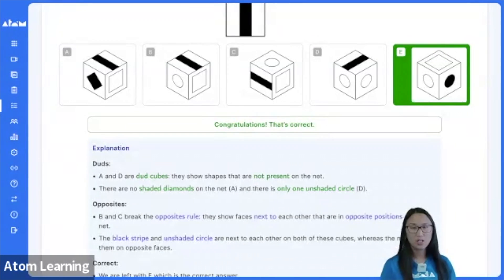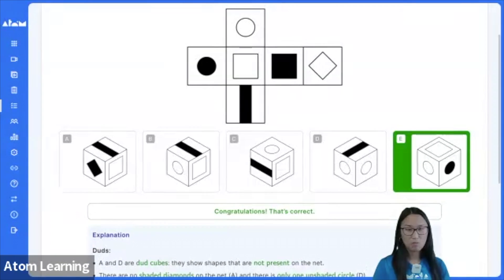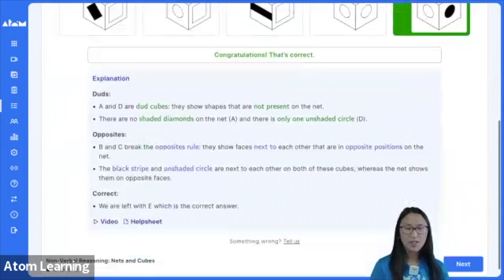B and C break the opposites rule. So the black stripe and unshaded circle are next to each other on these cubes. Whereas in the net, they should be opposite each other. So they shouldn't be shown at the same time. This leaves us with E, our correct answer.